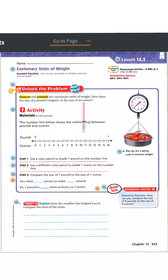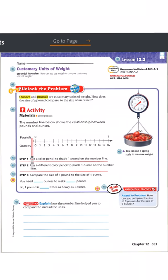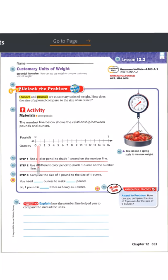Ounces and pounds are customary units of weight. How does the size of a pound compare to the size of an ounce? We're using a number line to show us one pound on the top half, and how ounces compare to that pound. The number line from zero to one represents one pound, and within that number line we have 16 ounces.